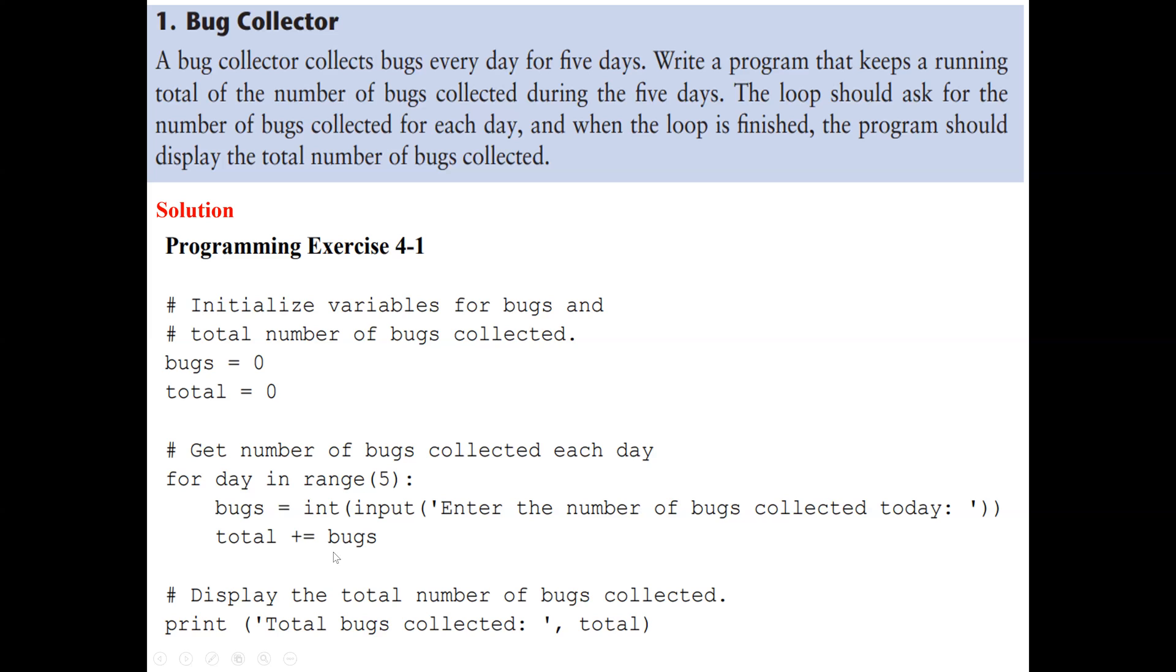And if there's any previous total, we add it more. So actually, it would be total equal to total plus bugs is the same as writing total plus equal bugs. So after this for loop execute five times, we are going to get the final total. So for example, the first time, our total is zero because we initialize it to zero. So let's say the user entered 20, so it would be zero plus 20.